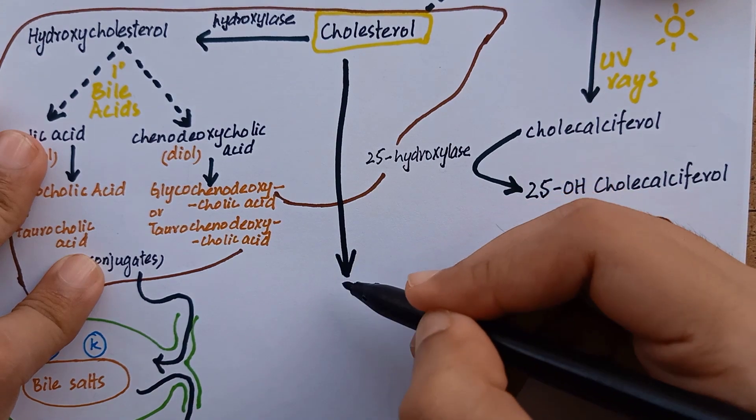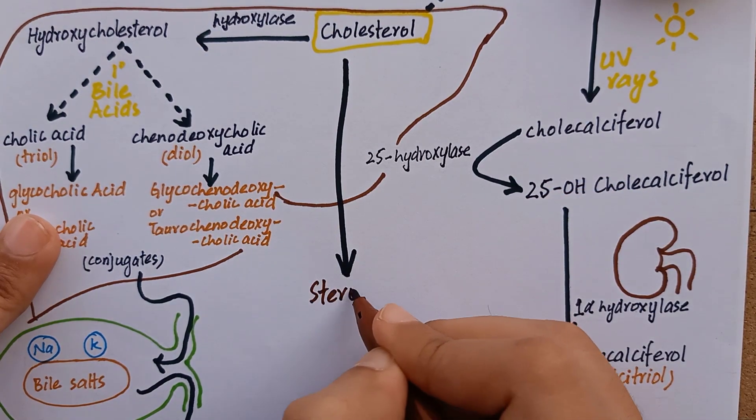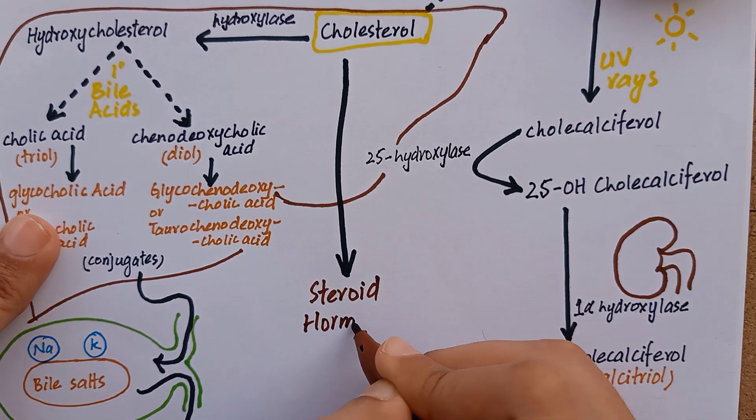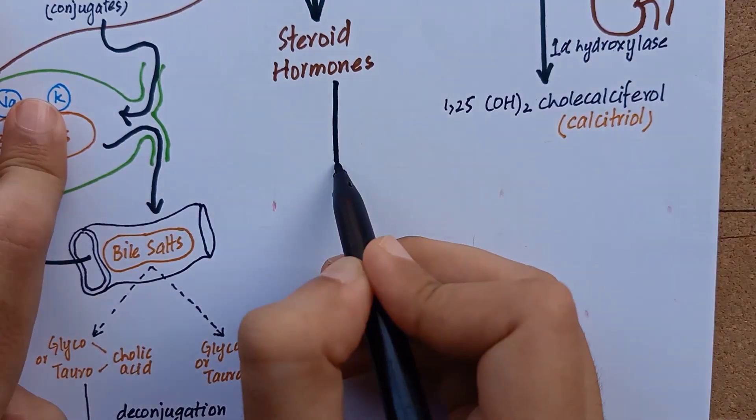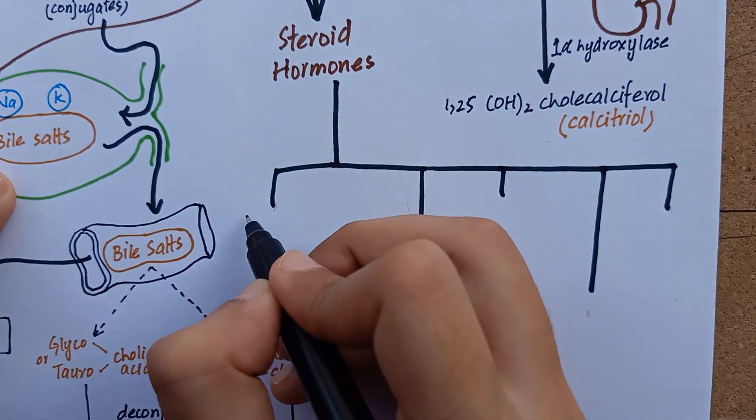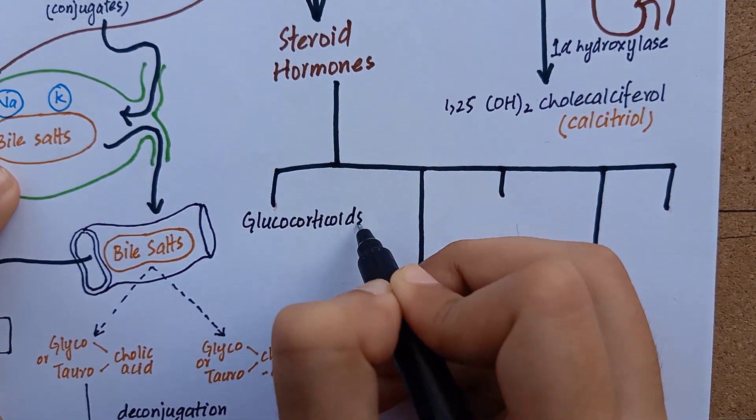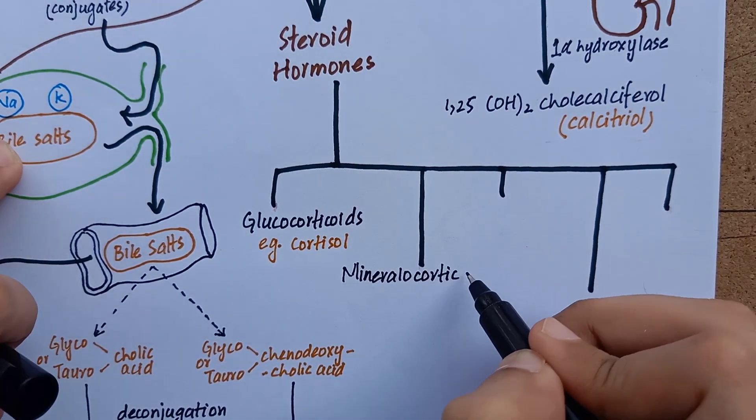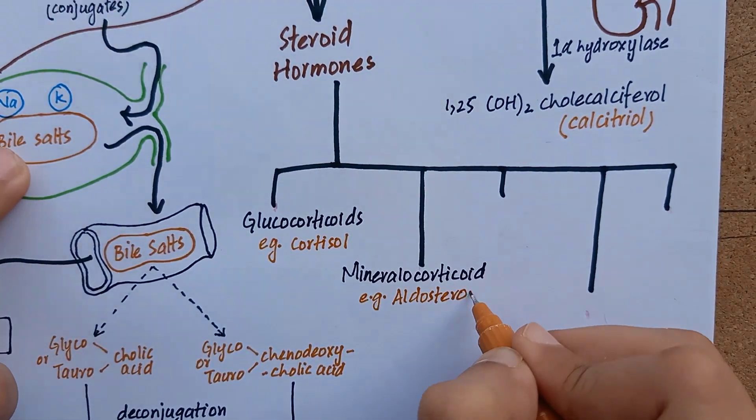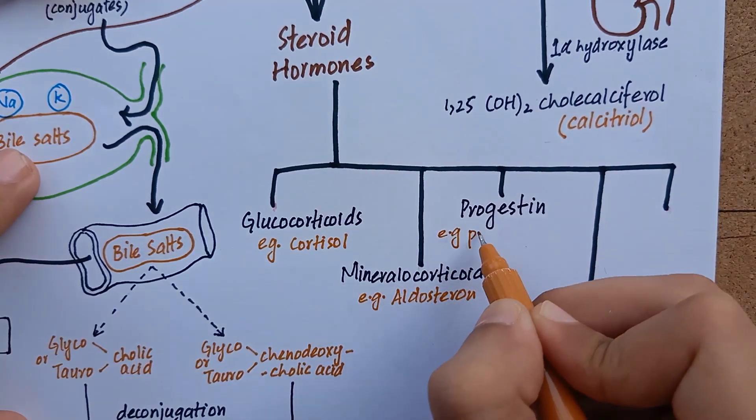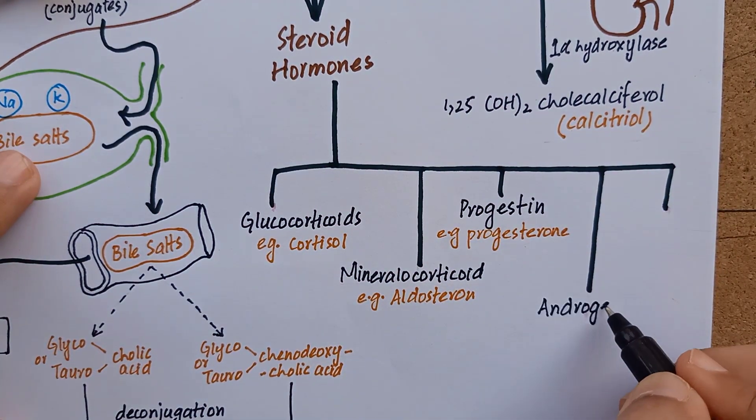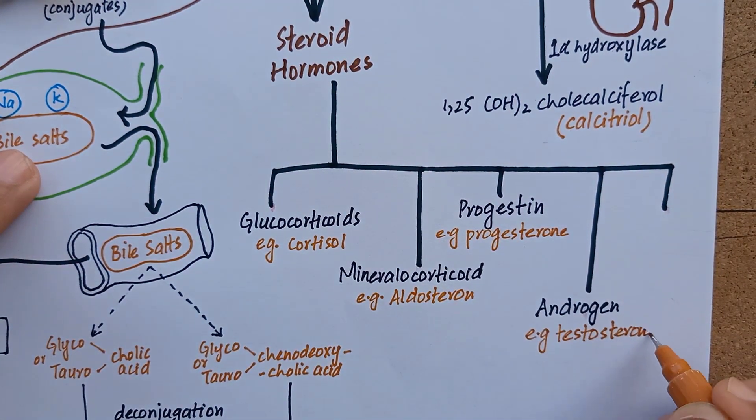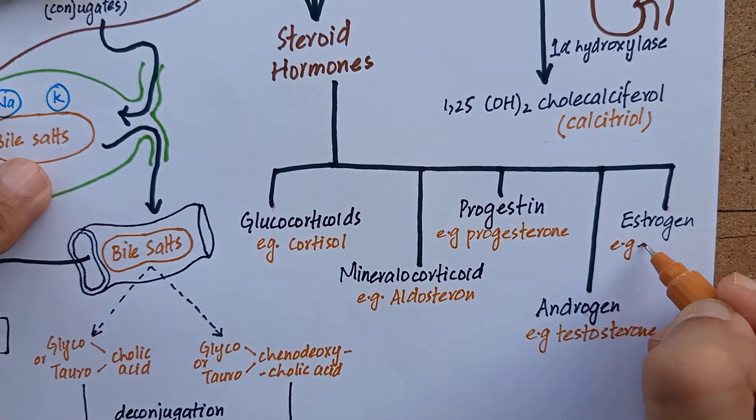The third process is the synthesis of steroid hormones from cholesterol. Cholesterol serves as a precursor for the synthesis of all five classes of steroid hormones, which are glucocorticoids for example cortisol, mineralocorticoids for example aldosterone, progestin for example progesterone, androgen like testosterone, and estrogen like estradiol.